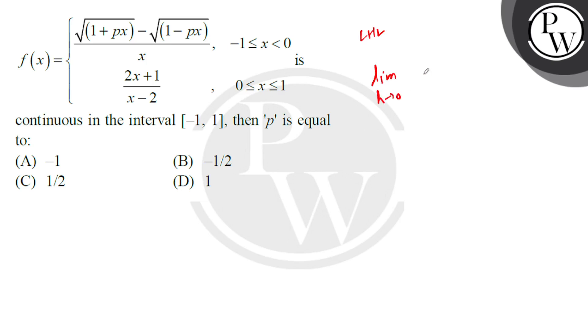0: √(1-px) - √(1+px) over -h. Now we rationalize it, so limit h tends to 0: √(1-px) - √(1+px)